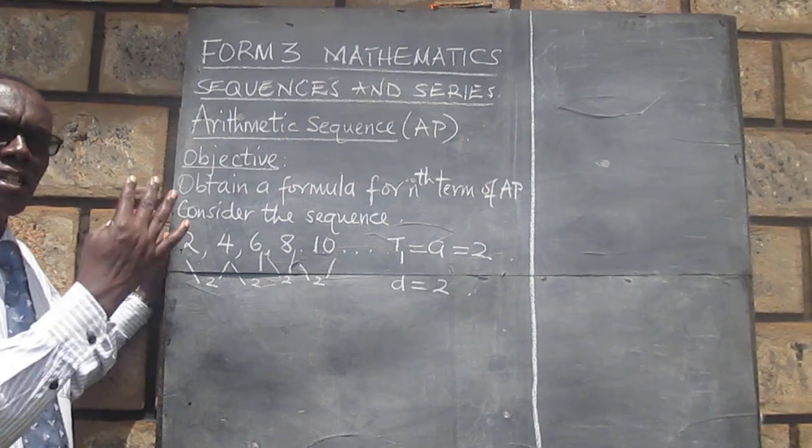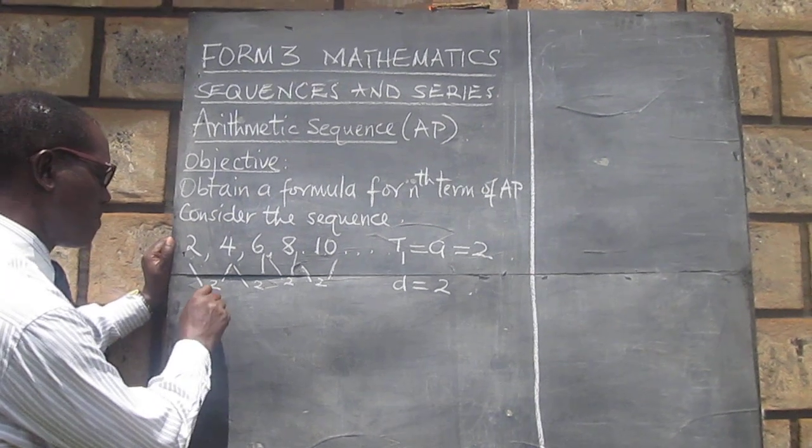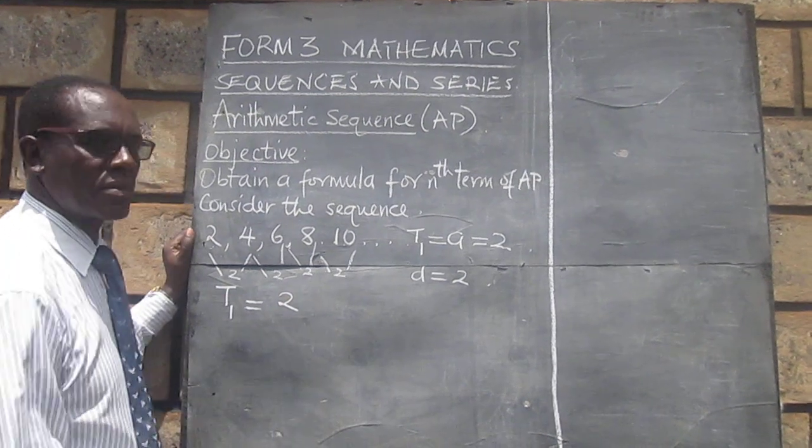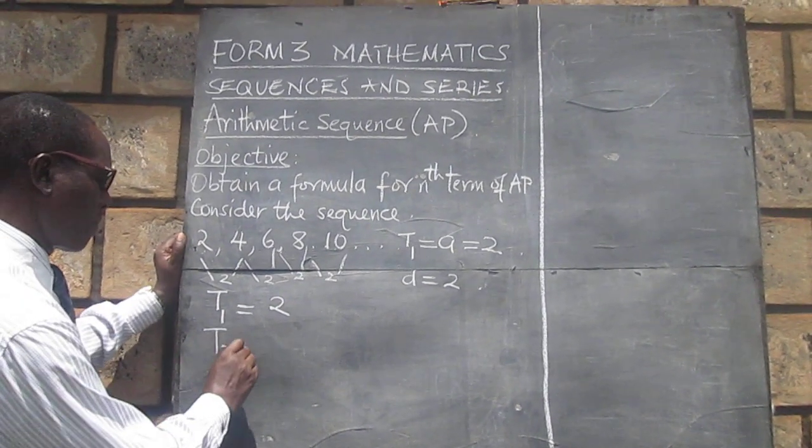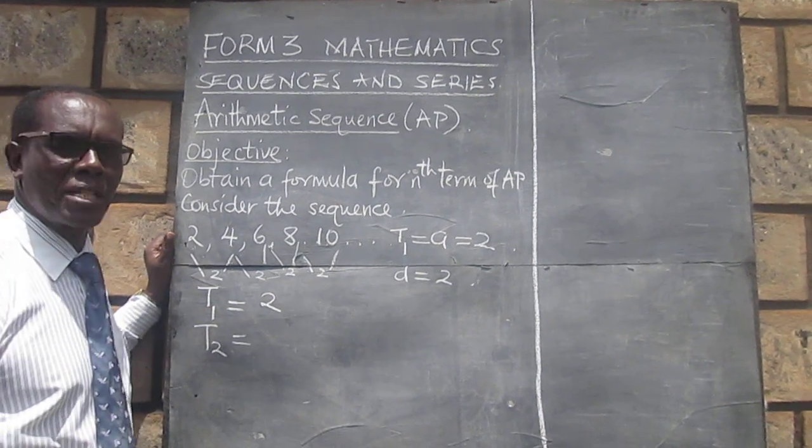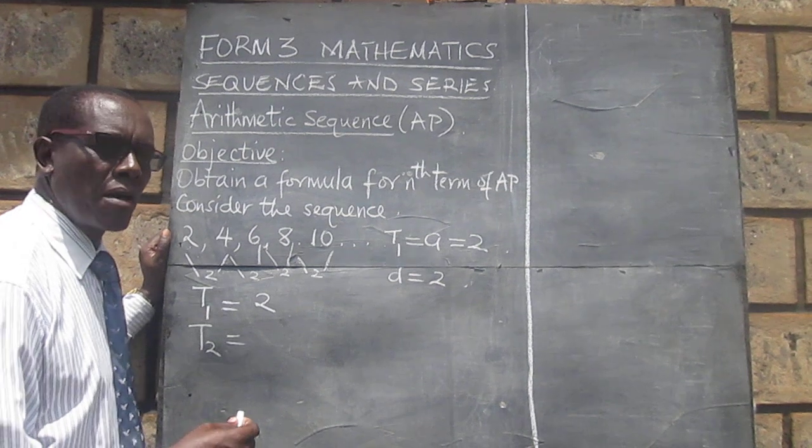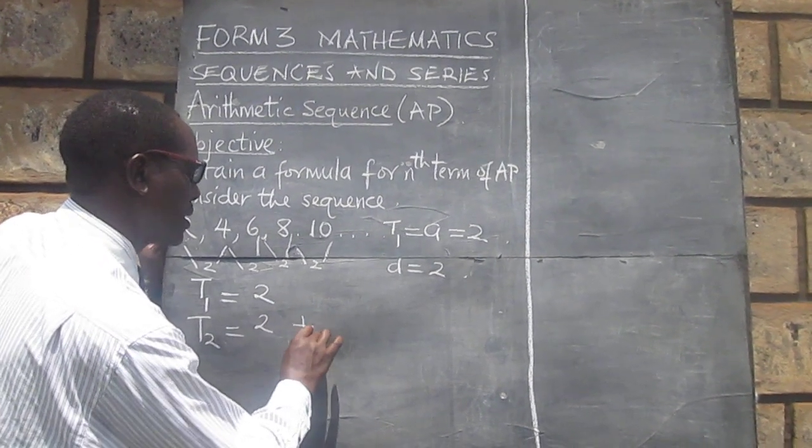We want to look at the relationship between the terms. We have said the first term, in this particular sequence, is 2. Then we look at the second term. Term number 2 is 4. We know it's 4, but we can also write it as 2 plus 2.